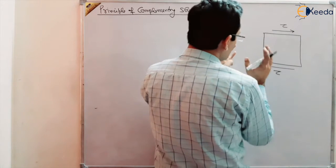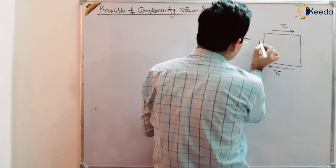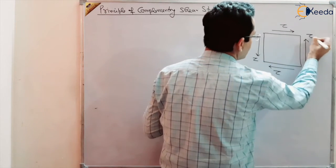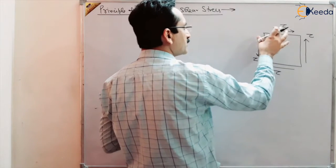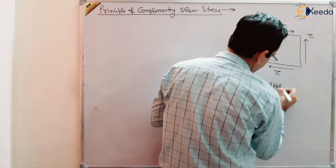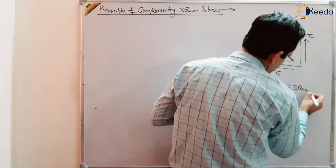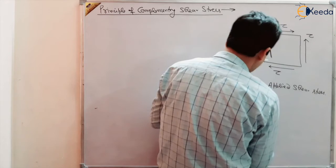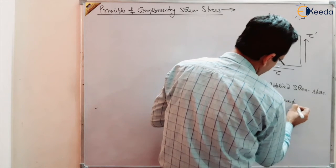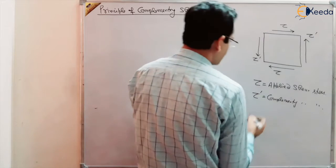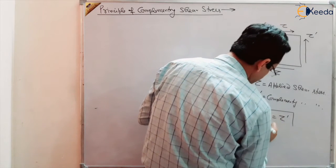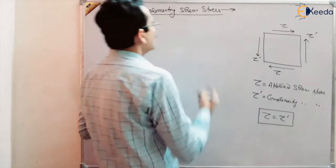We are discussing static equilibrium. To maintain the body in static equilibrium, there develop complementary stresses of the same magnitude in the opposite sense, so that the body will remain in equilibrium. If this is tau — the applied shear stress — and this is tau dash, then tau dash is the complementary shear stress. To maintain the body in static equilibrium, tau must be equal to tau dash.